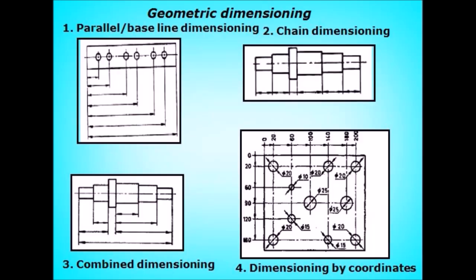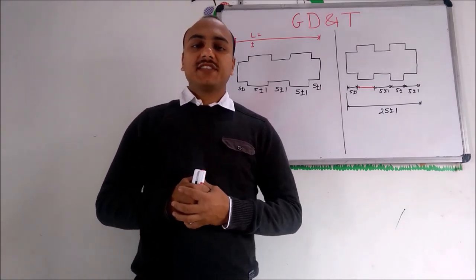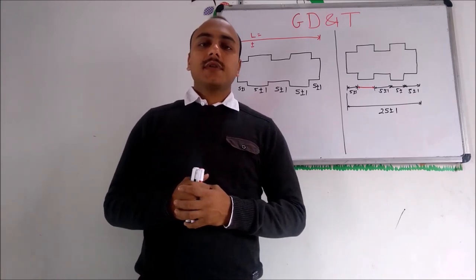The most commonly used dimensioning schemes are: first, baseline dimensioning, where all dimensions are defined from a single baseline; second, chain dimensioning, where all features are important and defined individually; third, combined dimensioning, where only the required features to be controlled are dimensioned; and fourth, dimensioning by coordinates. Let's now discuss how geometric dimensioning affects geometric tolerancing.